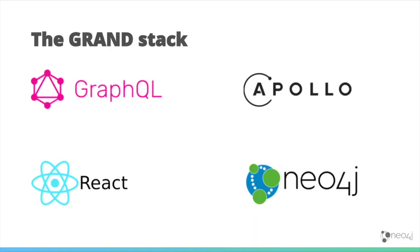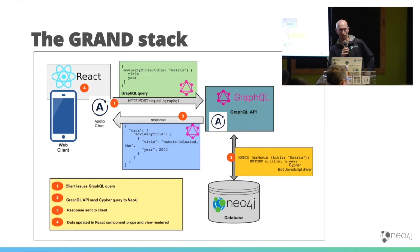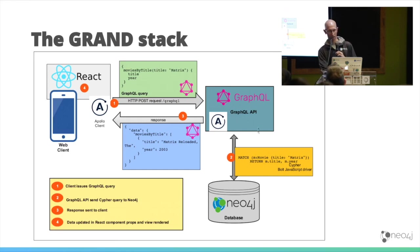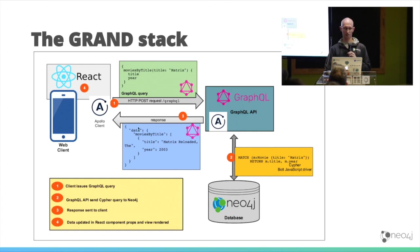We thought these two communities are thinking about problems in exactly the same way. So just to go back — we've got our GRAND stack, we've done an intro to all of those things. Now let's look at how they all glue together. Starting at step one: the Apollo client sends a GraphQL query to a GraphQL server, which converts it into a Cypher query. The response comes back and is bound by the Apollo client back to our React front-end. That's the workflow.